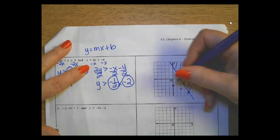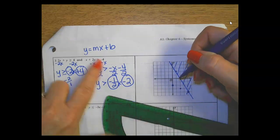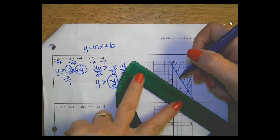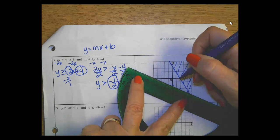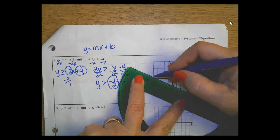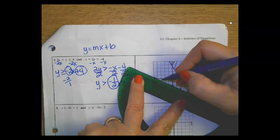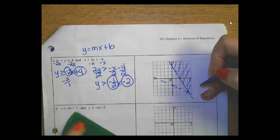This time it's a dotted line because of the greater than sign. It's kind of like that open dot, closed dot thing. Dotted line.